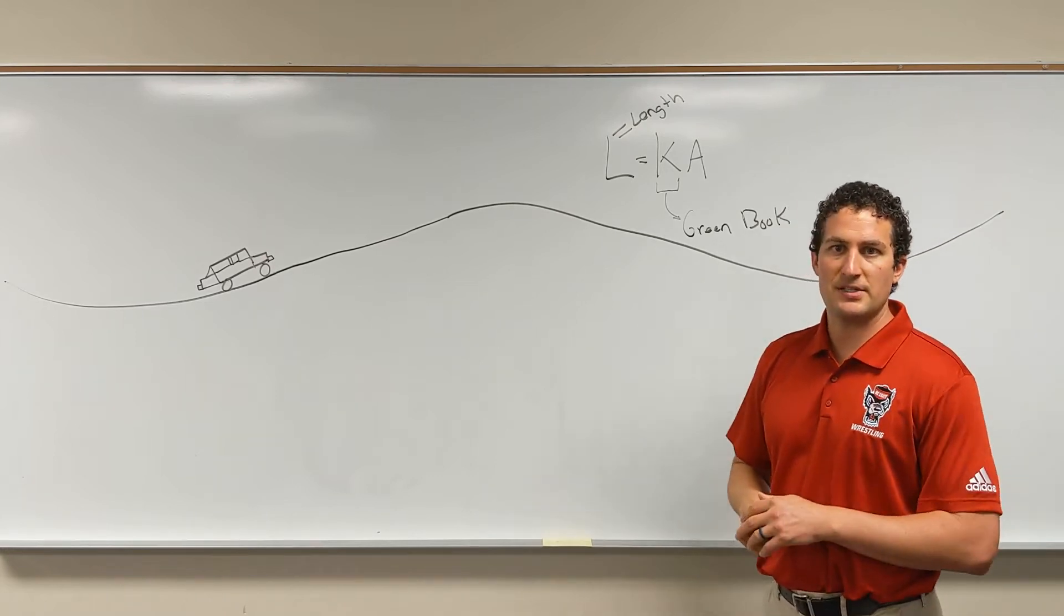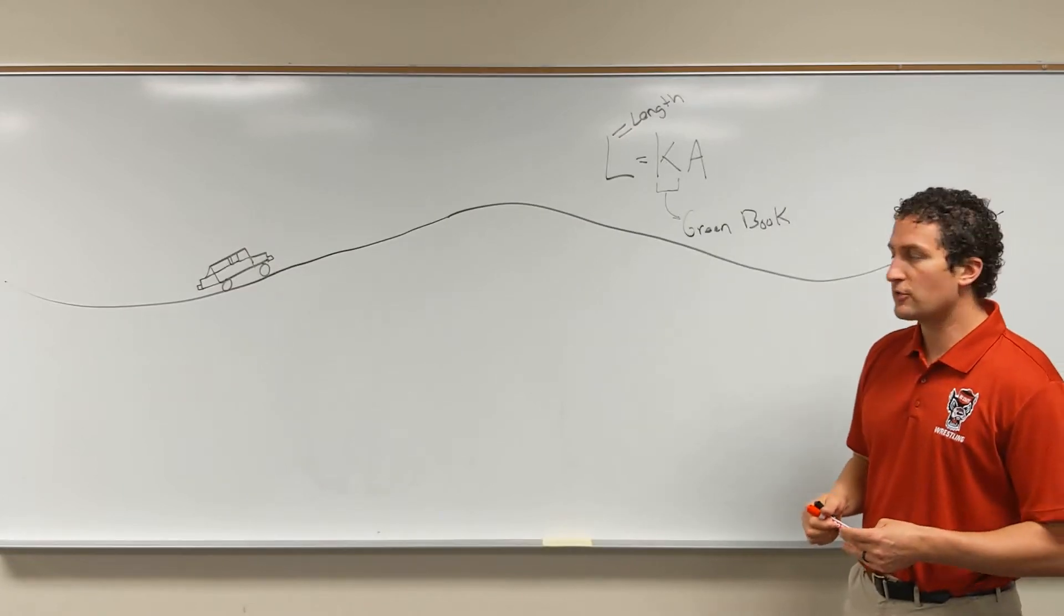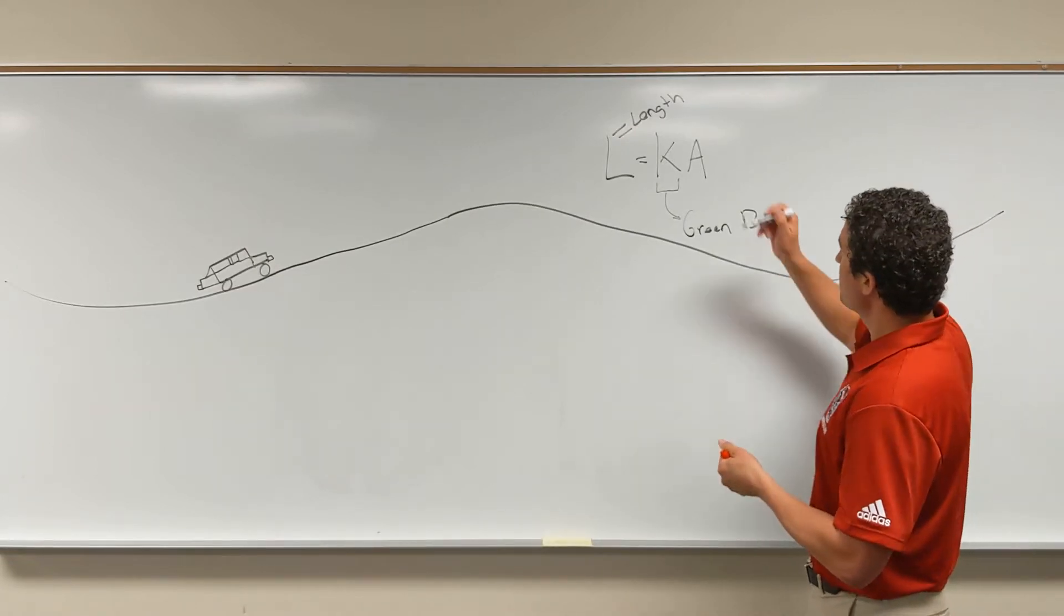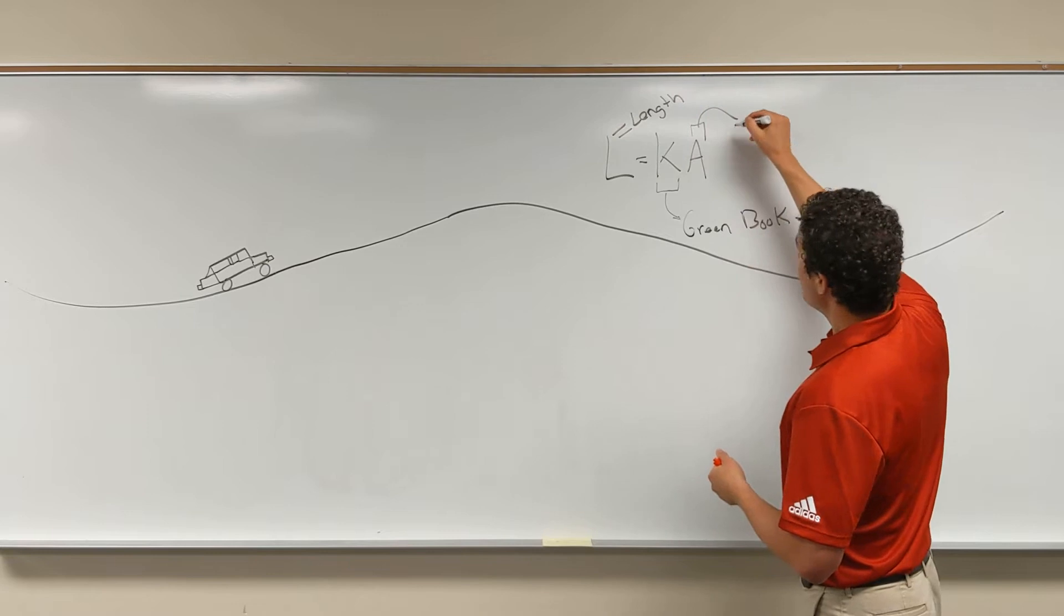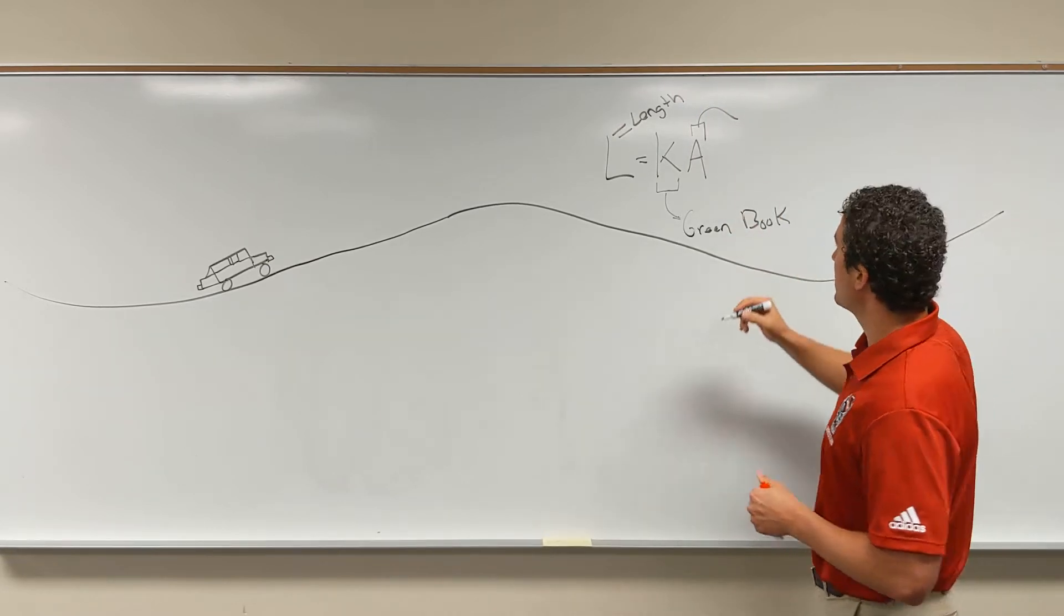It's going to be different for different types of curves. We can also have it for stopping sight distance and passing sight distance. And then our A is a geometric characteristic, the difference in grades, the algebraic difference in grades.